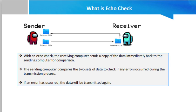In summary, a copy of the data is sent back to the sender. The return data is compared with the original data by the sender's computer. If there are no differences, then the data was sent without error. If the two sets of data are different, then an error occurred at some stage during the data transmission. This process is called an echo check.